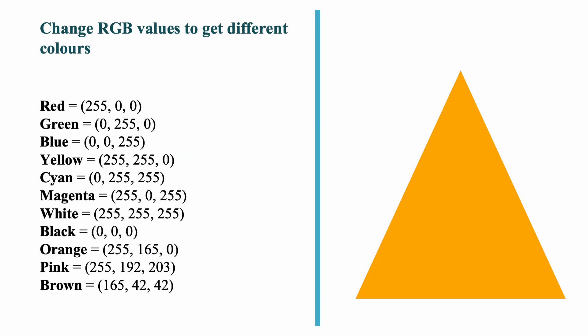In digital devices, colors are represented using RGB values where each value can range from 0 to 255. By adjusting the intensity of red, green and blue, we can create any color. For example, red is 255, 0, 0 while yellow is 255, 255, 0. This system allows over 16 million possible colors, giving us the rich variety we see on screens.